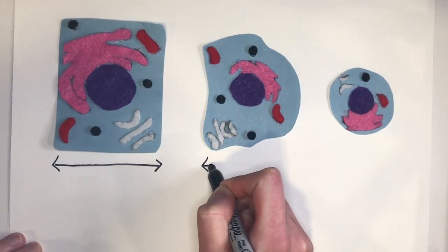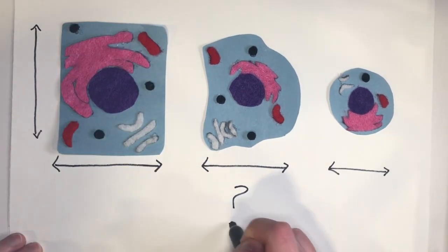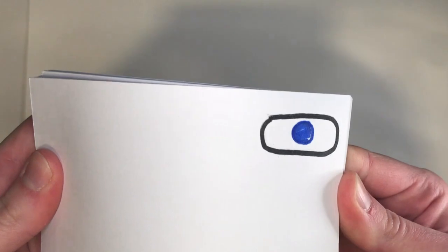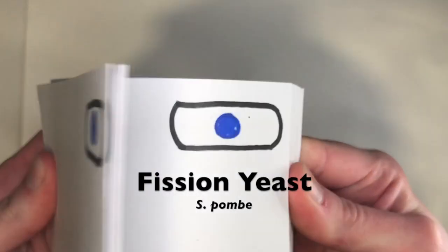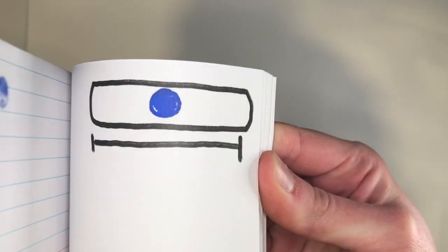How cells control their size has been an open question for over 100 years. Our lab studies cell size control using the model organism Schizosaccharomyces pombe or fission yeast. These rod-shaped cells always grow to the same size before entering mitosis and dividing.